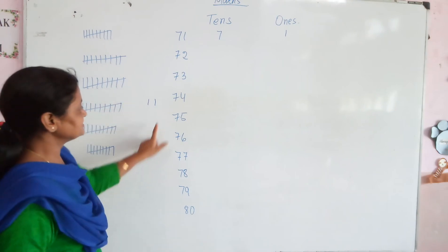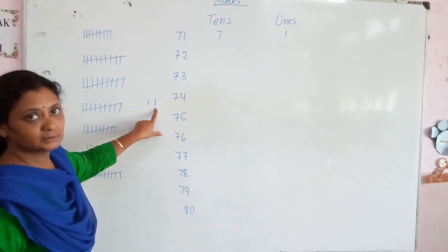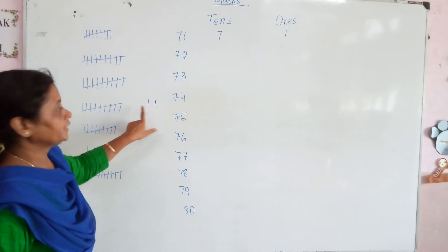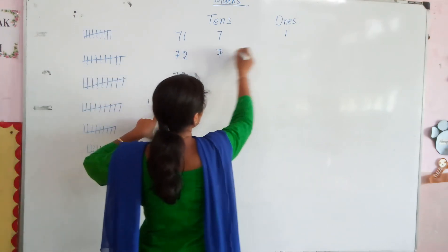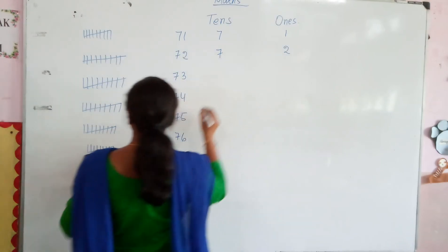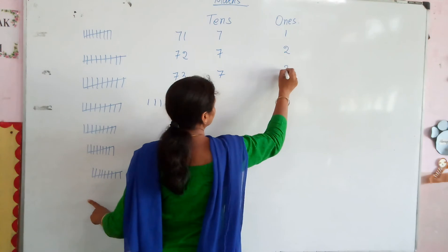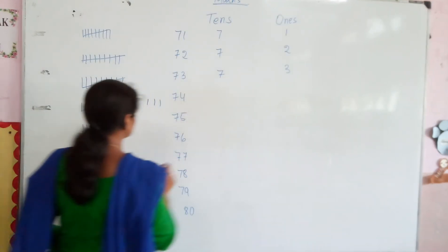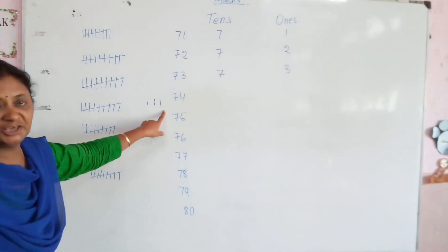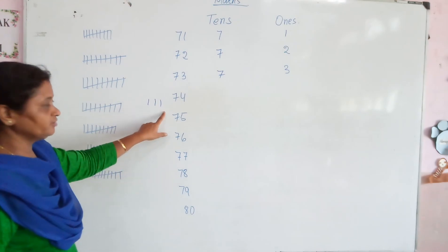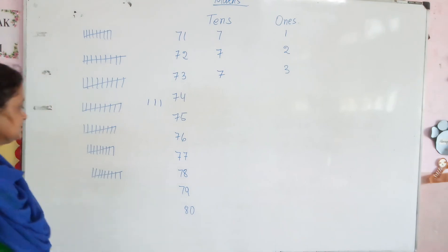Then 2 again — 72. That is 7 tens and 2 ones, and 2 extras are called 72. You will write 7 tens and 2 ones. Then 3 again — 7 tens and 3 ones. In this way, every time the number gets one extra, the number increases and you write the numbers as 10s and 1s.